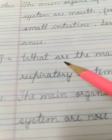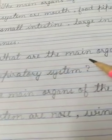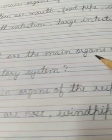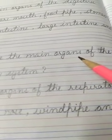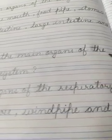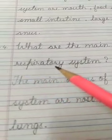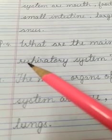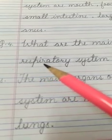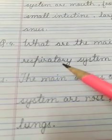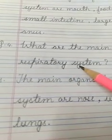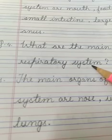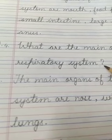What are the main organs of the respiratory system? R-E-S-P-I-R-A-T-O-R-Y, respiratory system, S-Y-S-T-E-M, question mark.